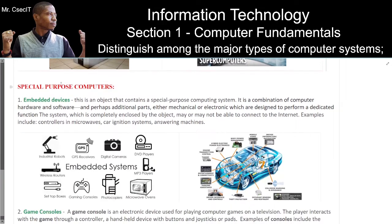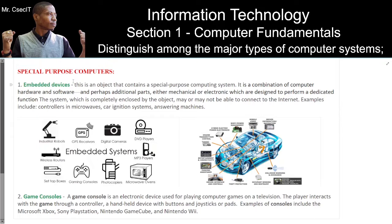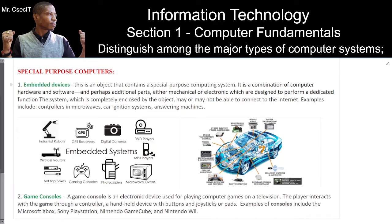Special purpose computers. Number one: embedded devices. This is an object that contains a special purpose computing system — a combination of computer hardware and software, and perhaps additional mechanical or electronic parts, designed to perform a dedicated function. The system, which is completely enclosed by the object, may or may not be able to connect to the internet. Examples include controllers in microwaves and car ignition systems, and answering machines.